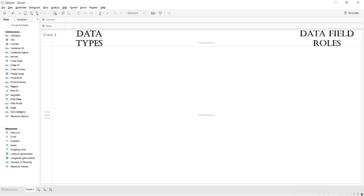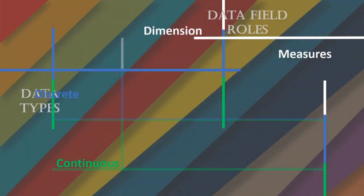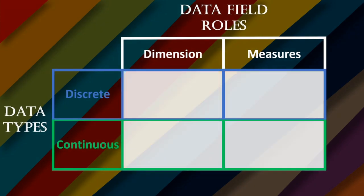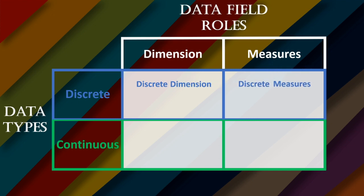Visualization using these attributes can be achieved using four combinations. We have Discrete and Continuous along with Dimensions and Measures. If any discrete attribute is used in a dimensional role, it will be called a Discrete Dimension. If any discrete attribute is used as a measure, it is called a Discrete Measure. If any dimension is used as a continuous field, it is called a Continuous Dimension. And if any measure is accessed continuously, it is called a Continuous Measure.